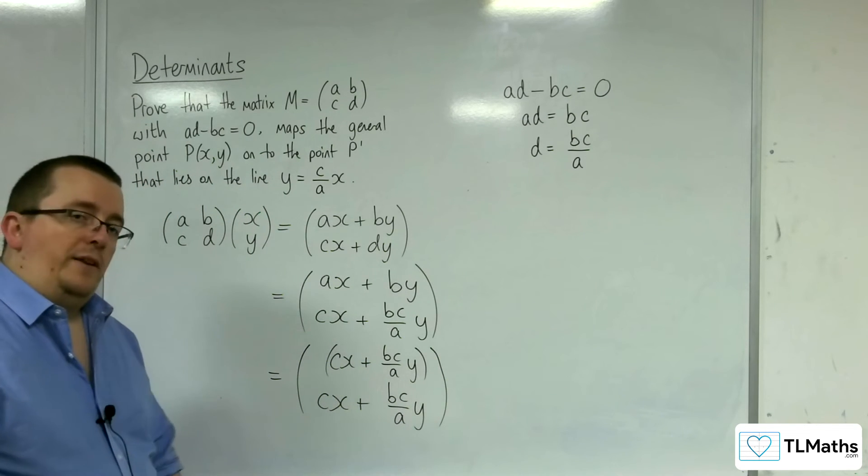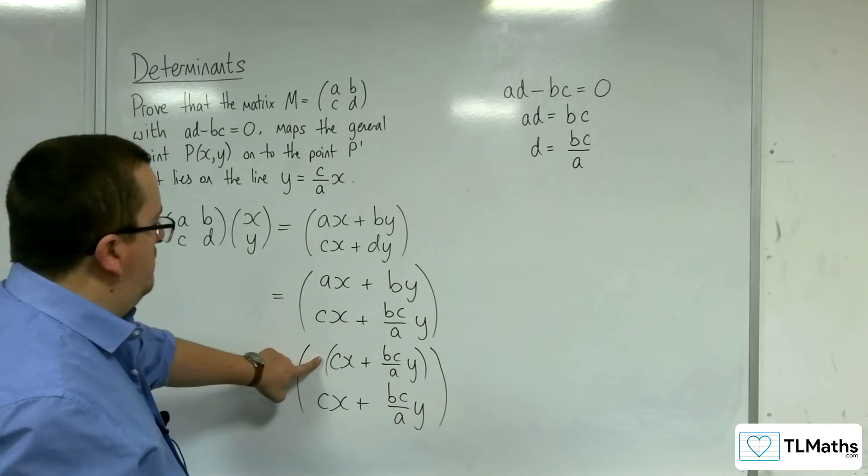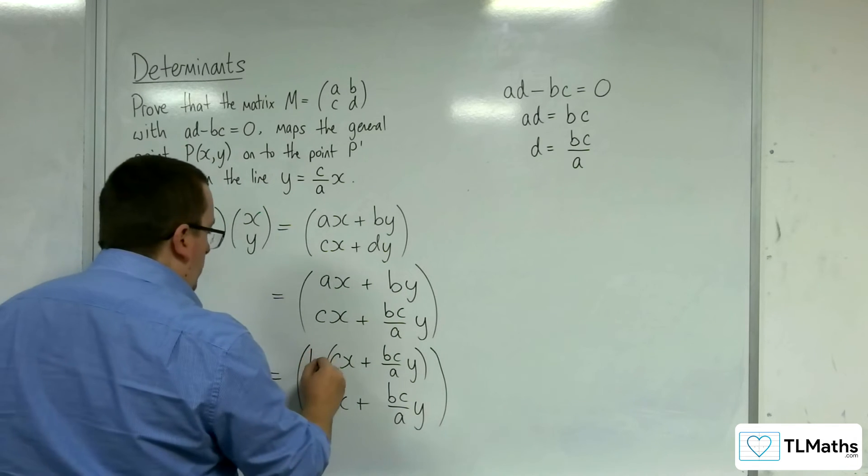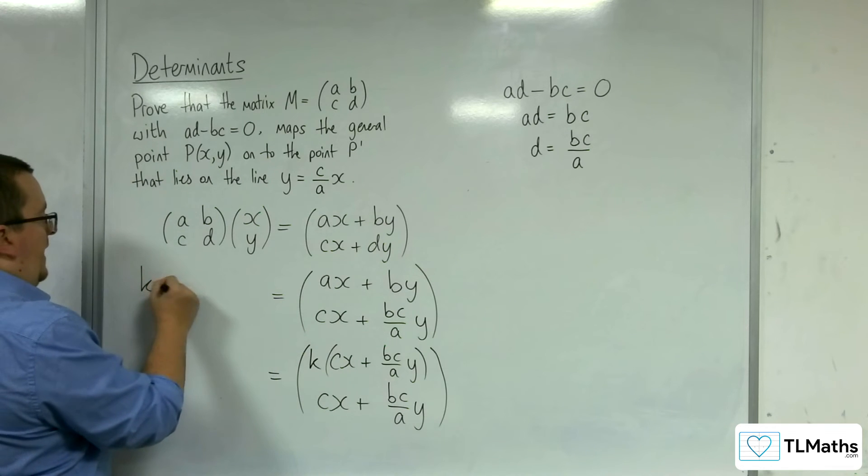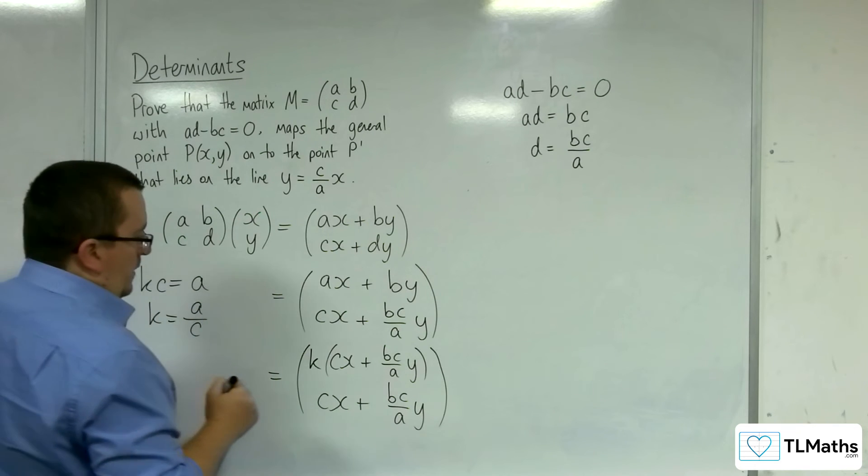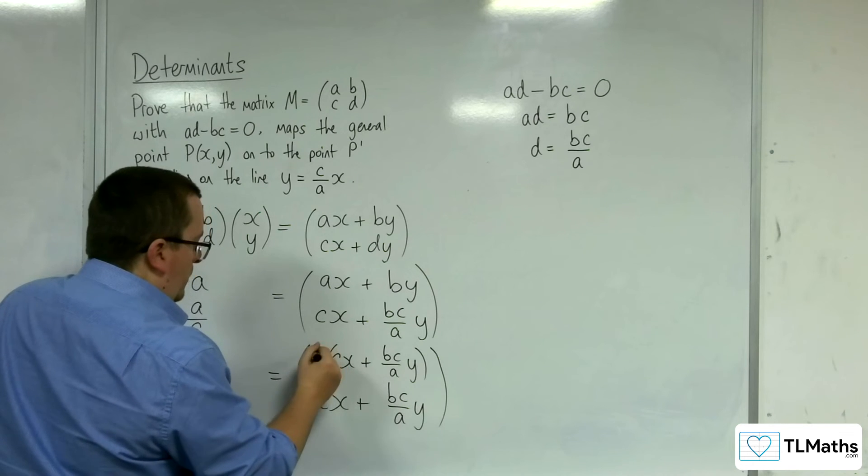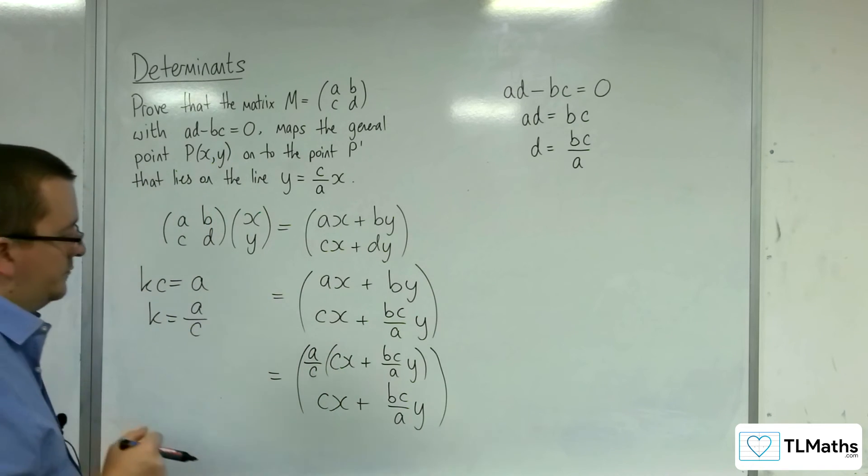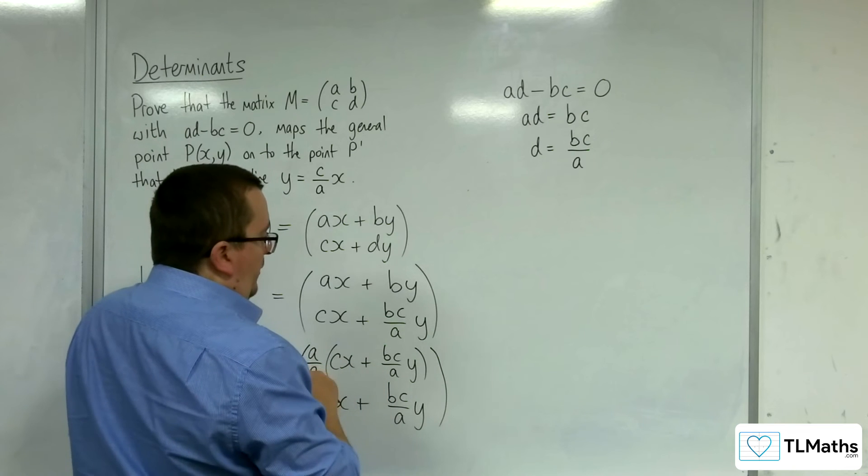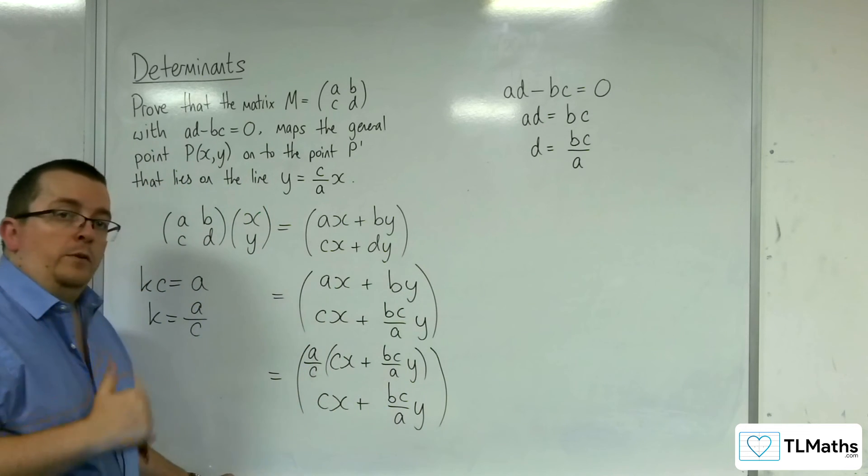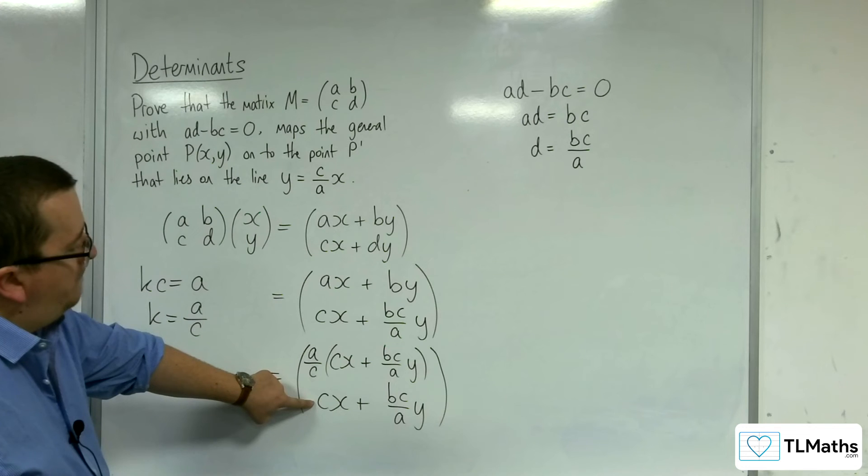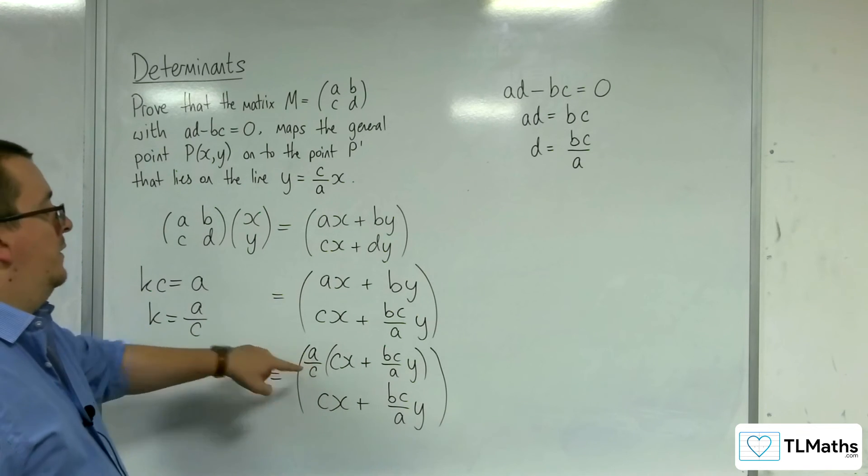Now, let's see if we're in a better situation. Is there something that I can multiply this bracket by to get to this? So, whatever that multiplier is, I need k times c to be equal to a. So, k would have to be a over c. Now, if we replace the k with a over c, a over c multiplies with the cx to get me ax. a over c multiplies with the bc over a to give me b. So, yes, it works. And you can recognize then that the y coordinate is actually c over a times the x coordinate.